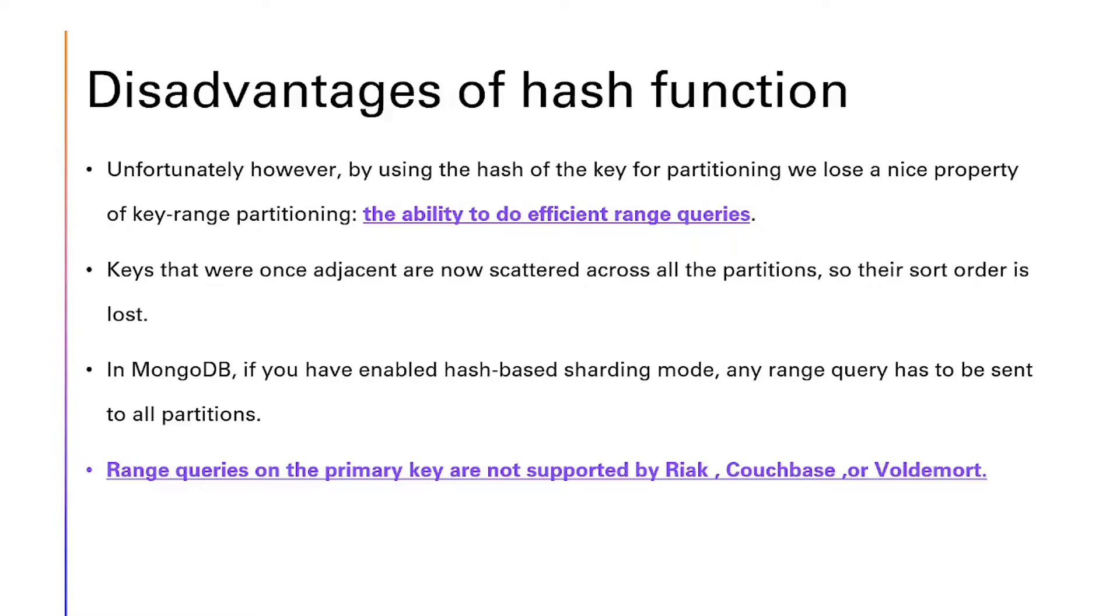In MongoDB, if you have enabled hash-based sharding mode, any range query has to be sent to all partitions. Range queries on the primary key are not supported by Riak, Couchbase, or Voldemort.